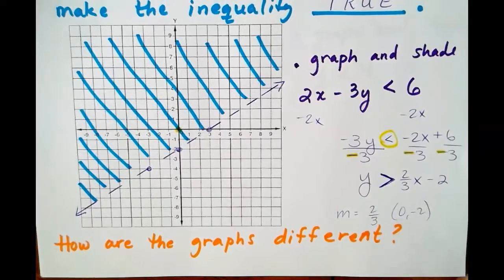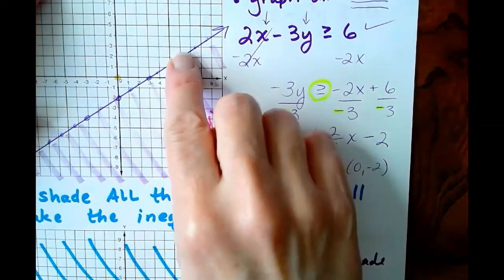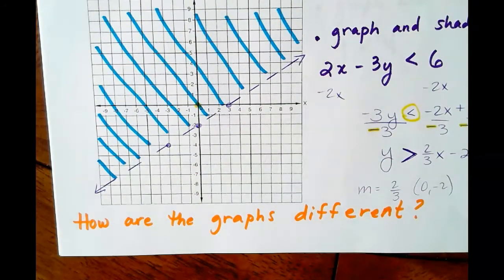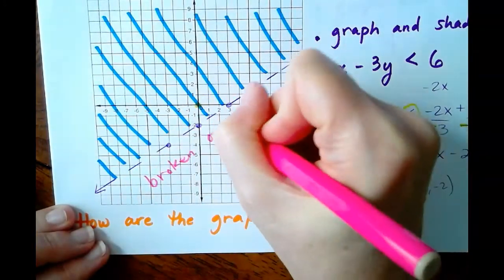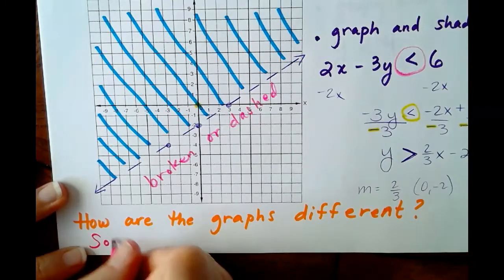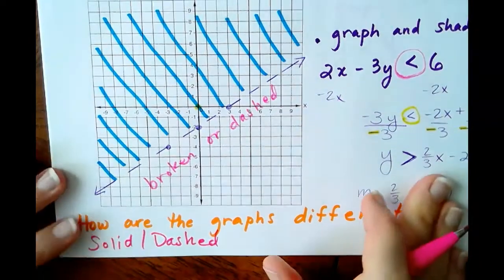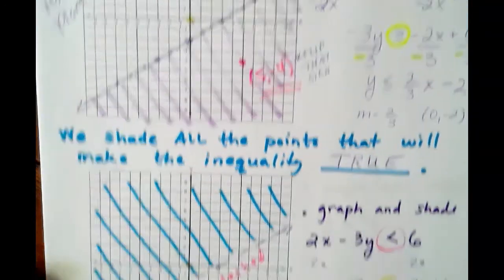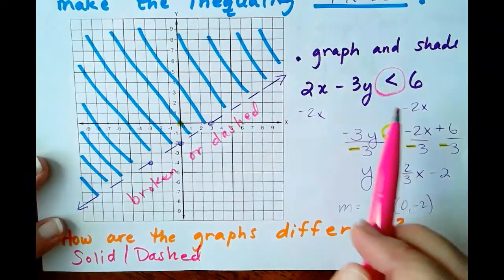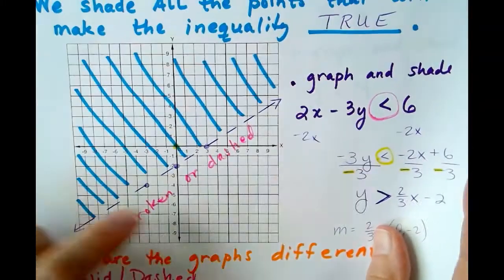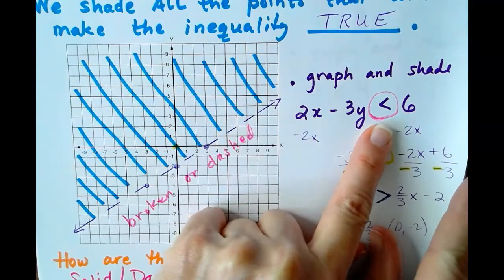So how are the two graphs different? The first graph had a solid line because of the 'or equal to' sign; the second graph has a broken or dashed line because it is strictly less than — no 'or equal to.' The first graph was shaded below to include the points that make the inequality true, while the second graph is shaded upward. Broken or dashed lines only appear when it's strictly less than or strictly greater than.